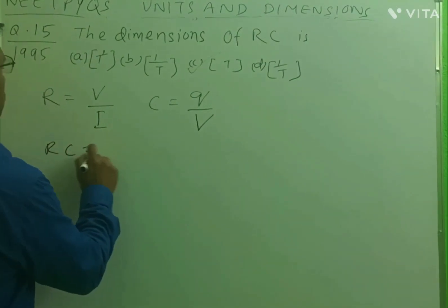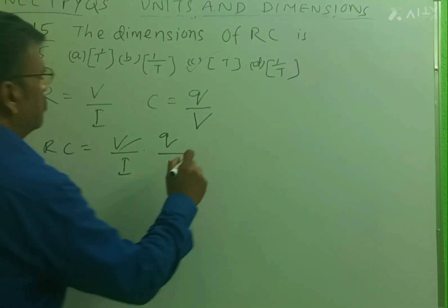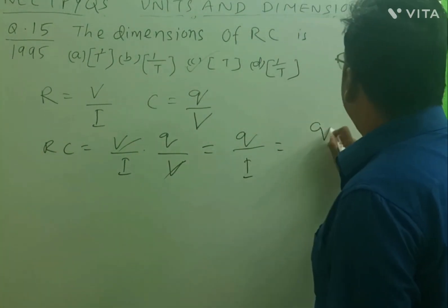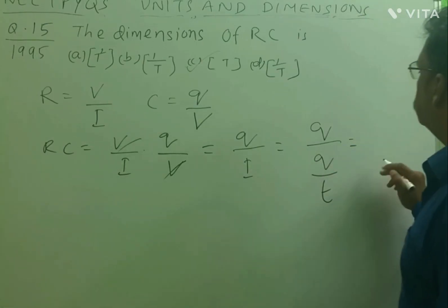So RC will be equal to V by I into Q by V. So this V, V will cancel out and this will be Q by I. What is current? Current is the rate of flow of charge. Then this is Q by T.